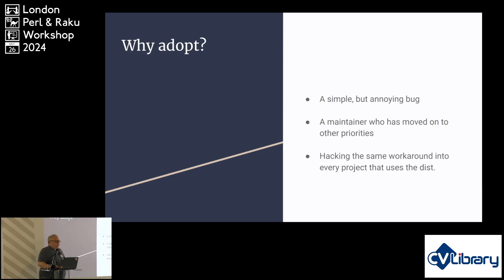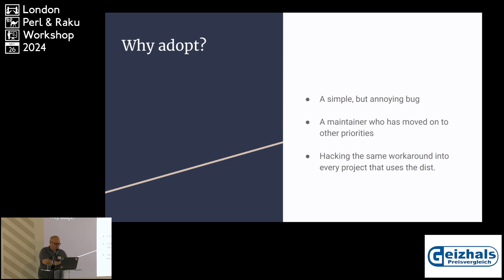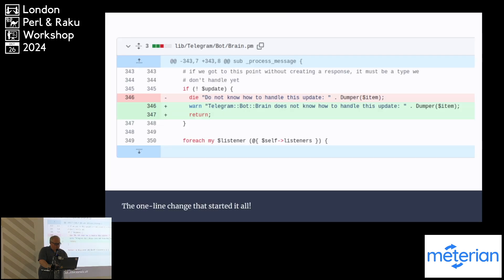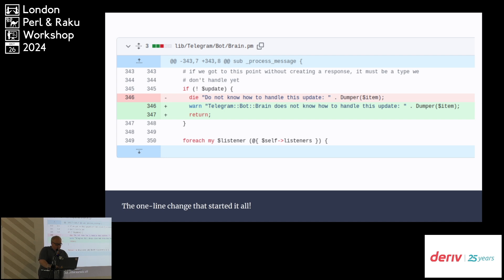I'm conscious that I've talked about why I adopted it but only told you about the problems of the module. The module hadn't been updated for four years, and I found myself adding the same patch to every project I started — adding the same patched version of the bot library to every single project. It would be incredibly convenient to just have the updates in the version on CPAN. But the maintainer wasn't active. The change itself? I changed DIE to WARN, slightly clarified the error message, and returned instead of dying. It's the dumbest thing that fixed the problem.